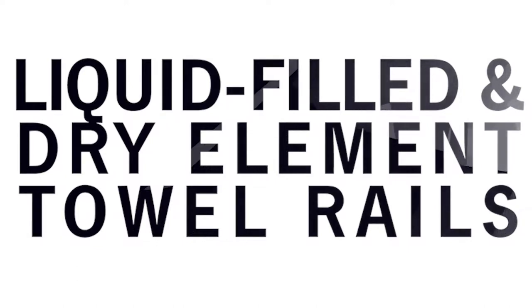Today we are going to go over the two main types of heated towel rails. These are dry element electric heated towel rails and liquid filled heated towel rails. We're going to cover the five key differences between these two options.